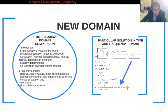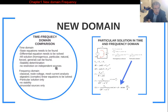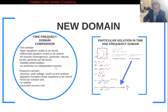This solution can be found in the time domain. We can determine whether the circuit is stable or not in the time domain. There is no restriction on independent sources — different types of independent sources can be used. When we come to this new domain, there are some advantages and also some disadvantages.